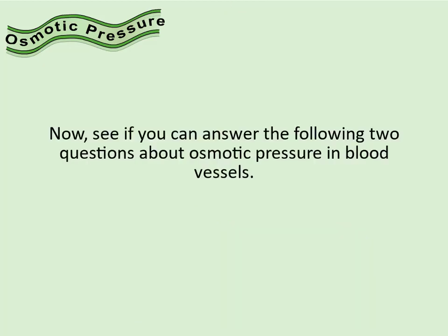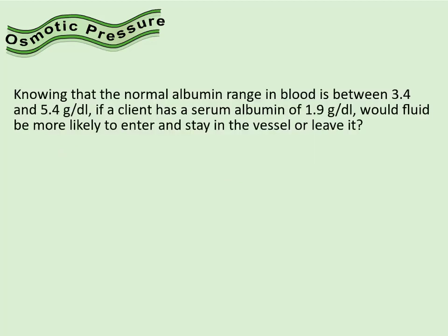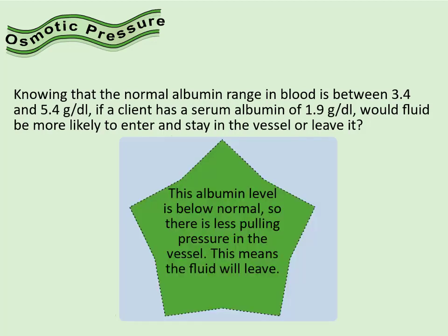Now see if you can answer the following two questions about osmotic pressure in blood vessels. Knowing that the normal albumin range in blood is between 3.4 and 5.4 grams per deciliter, if a client has a serum albumin of 1.9 grams per deciliter, would fluid be more likely to enter and stay in the vessel or leave it? This albumin level is below normal, so there is less pulling pressure in the vessel. This means the fluid will leave.